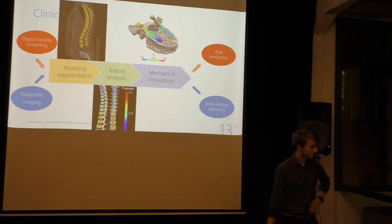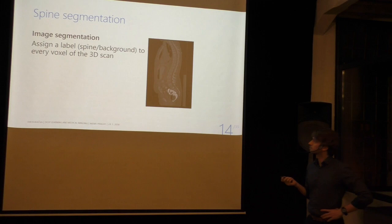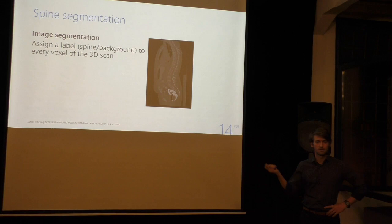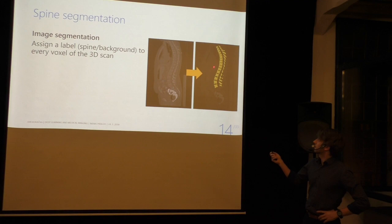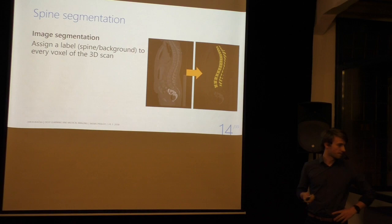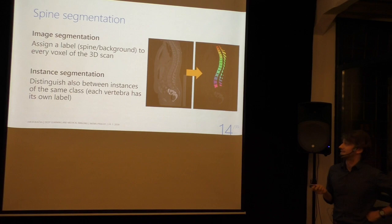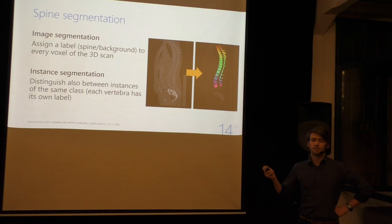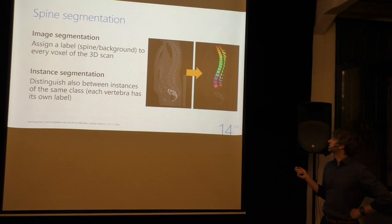For those not so familiar with computer vision: image segmentation is the computer vision problem where we need to assign a label to every single voxel of the volume. From the input image we want to extract something where the dark area means background and the yellow area means this is spine. What we'd really want is instance segmentation — not only distinguishing between types of objects but also instances, so we say this blue thing is vertebra L2 and this pink one is vertebra L5.